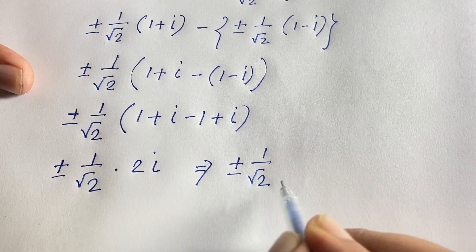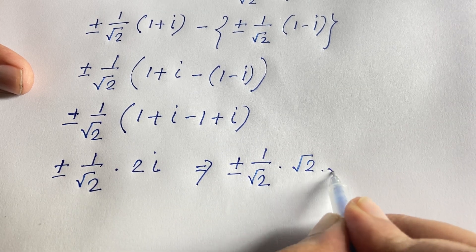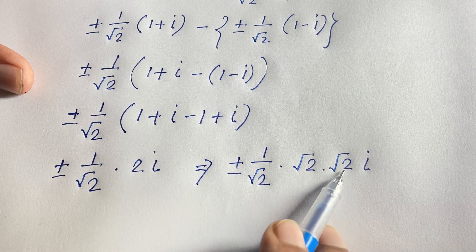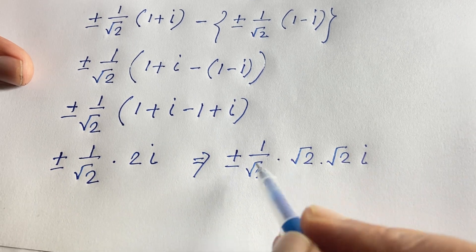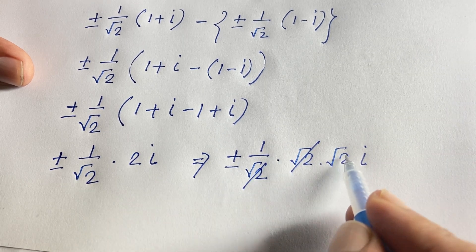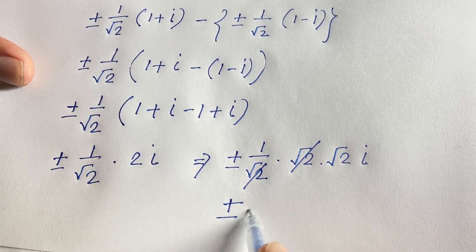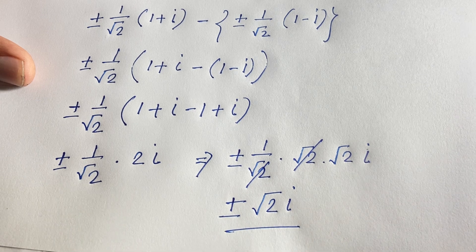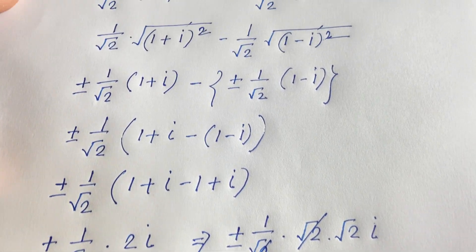So the expression becomes ±(1/√2) · 2i. Now (1/√2) · 2 = 2/√2 = √2, since √2 · √2 = 2. Therefore our final answer is ±√2 · i. This is the answer to this complex number question.